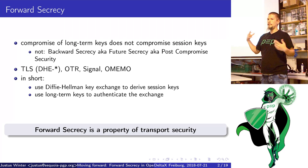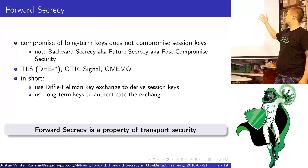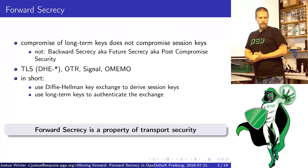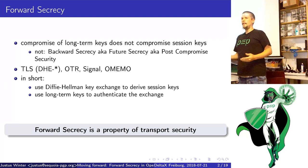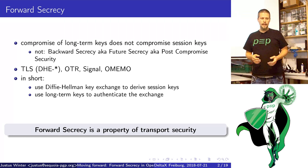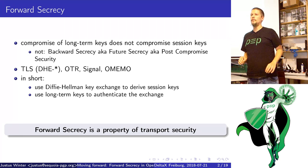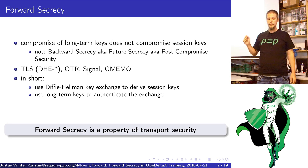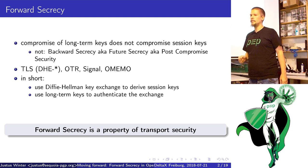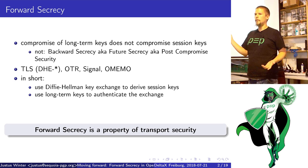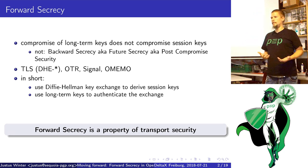Backward secrecy protects you from compromise in the past. Backward secrecy, confusingly, is also called future secrecy or past compromise security. Forward secrecy is implemented in TLS with the ephemeral Diffie-Hellman cipher suites, and is known from the instant messaging world as a really early version in form of the OTR protocol. Nowadays we have Signal, WhatsApp, and OMEMO using a new kind of cryptographic primitive to achieve forward secrecy.